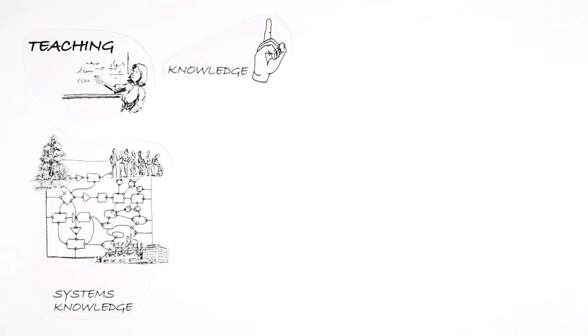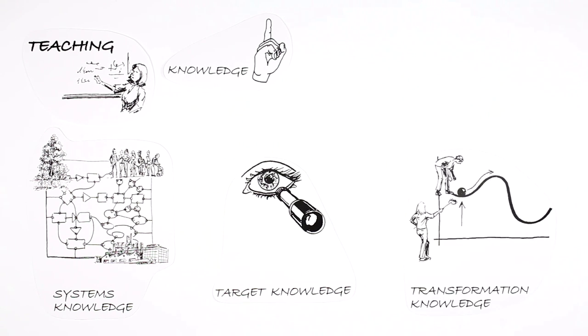Take systems knowledge, for example. We can ask ourselves, what do we know about how our environment, society and the economy work, individually or in their complex interrelations? Target knowledge asks what we can do to develop common visions of sustainable development. And finally, transformation knowledge. How can we contribute to implementing these visions?